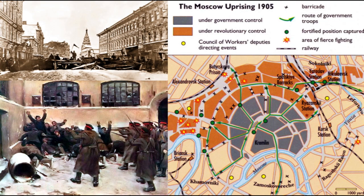In December, after an uprising of the Moscow Soviet was brutally crushed after weeks of street fighting, the Russian middle class, such as it was, became so frightened that they turned back to autocracy, choosing security over liberty.